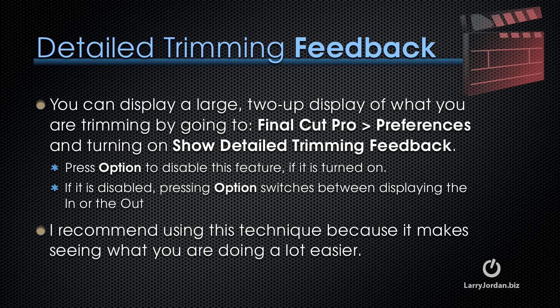There's a new feature inside Final Cut Pro X called Detailed Trimming Feedback. This displays a large 2-up display of what you're trimming by going to Final Cut Pro Preferences and turning on Show Detailed Trimming Feedback in the editing tab. If this is turned on, you can disable it by holding the option key down.